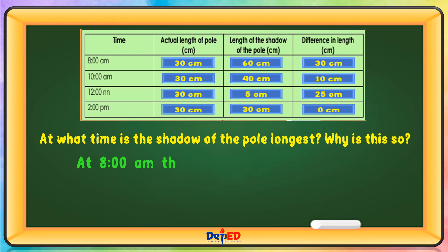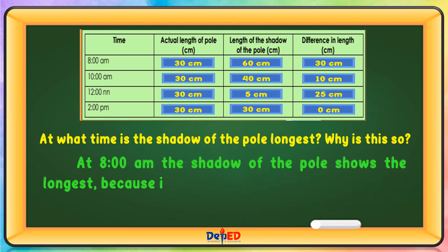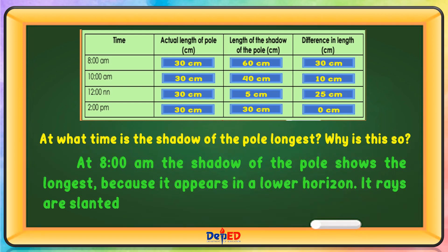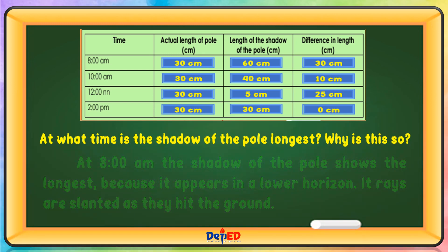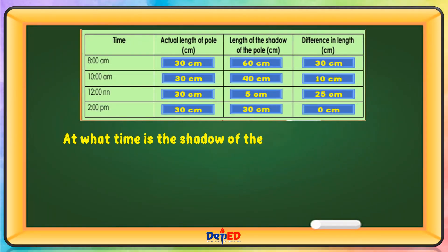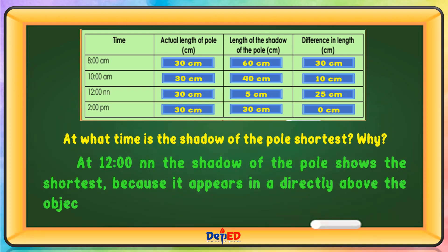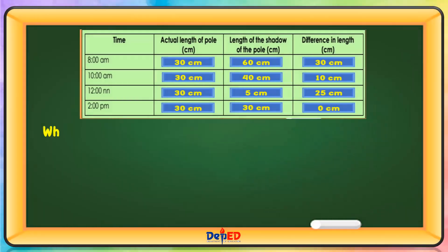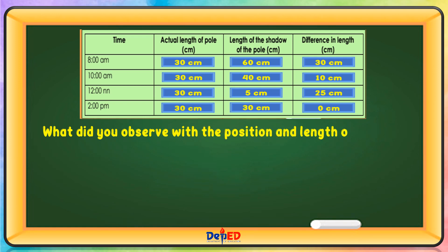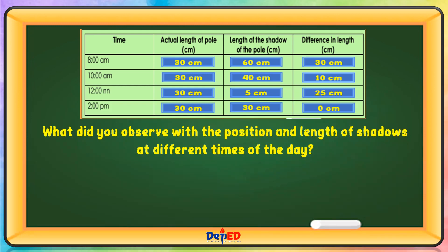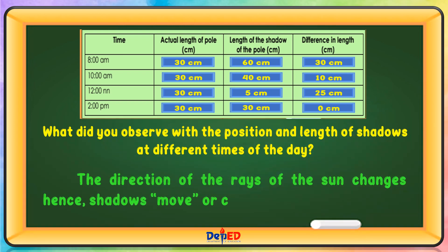At 8 a.m., the shadow of the pole is the longest because the sun appears in a lower horizon and its rays are slanted as they hit the ground. At 12 noon, the shadow of the pole is the shortest because the sun is directly above the object. The direction of the rays of the sun changes; hence, shadows move or change in position.